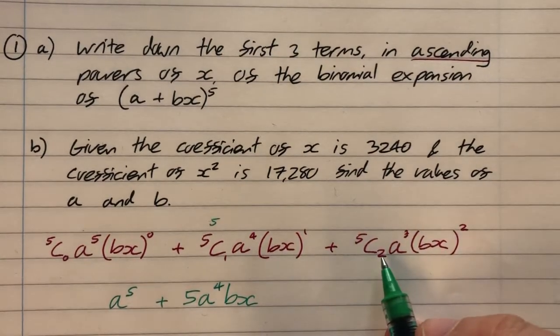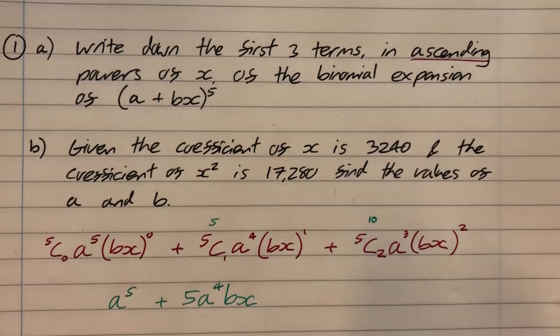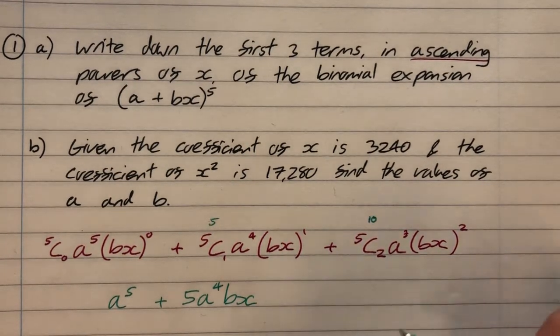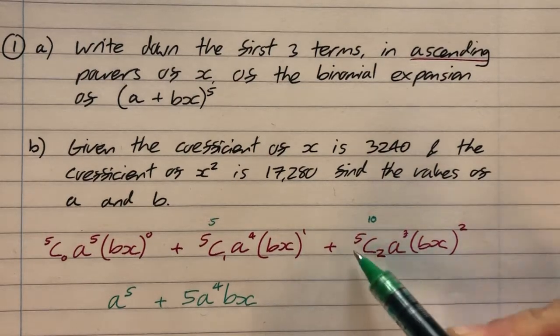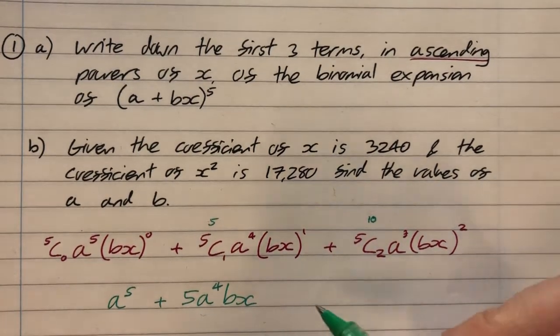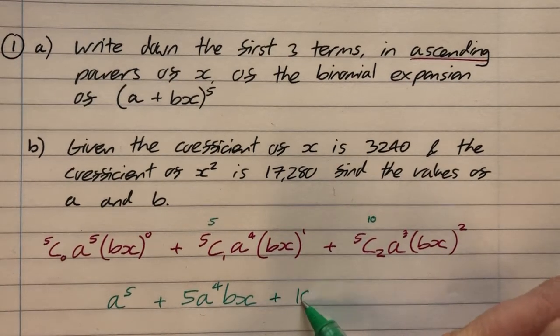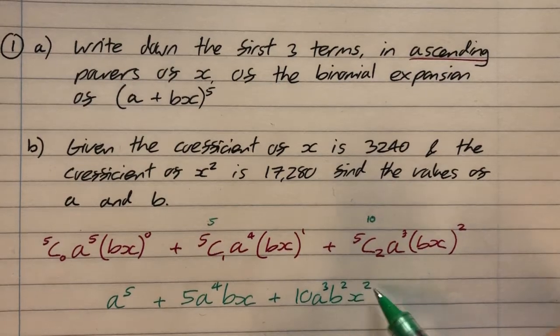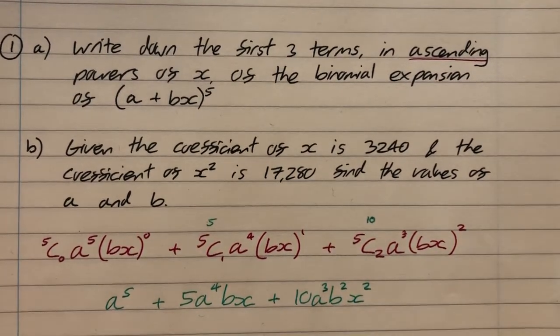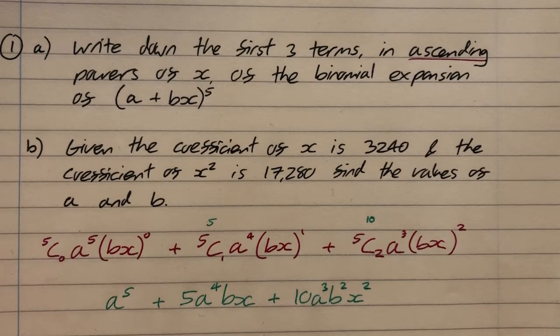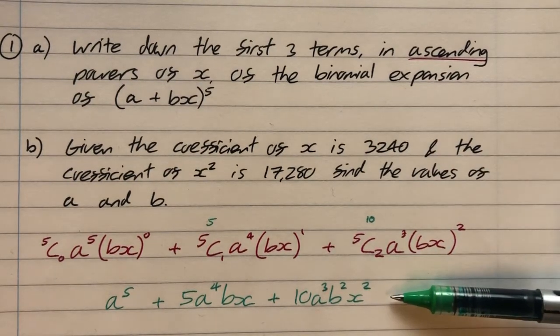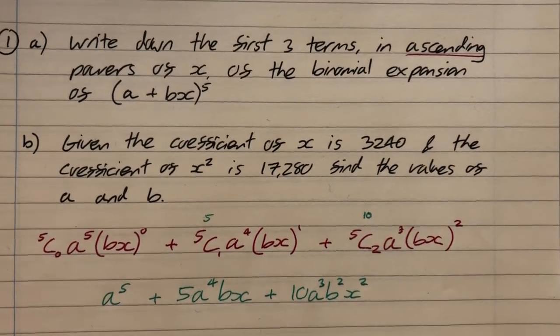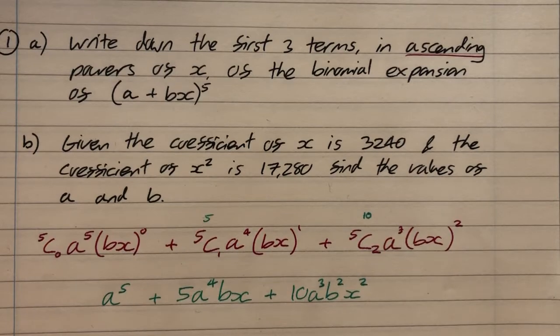5C1, that's just five. A to the four times bx to the one. So that's going to be 5a to the 4 bx. And then 5C2 is the number 10. So you can either get that using the choose function on the calculator or the factorial definition or Pascal's triangle. However you do it, you'll arrive at the number 10. So it's going to be plus 10 a cubed b squared x squared. Don't forget the squared there affects the b as well as the x. So that answers part a. This here is the first three terms in ascending powers, increasing powers of x of this binomial expansion.